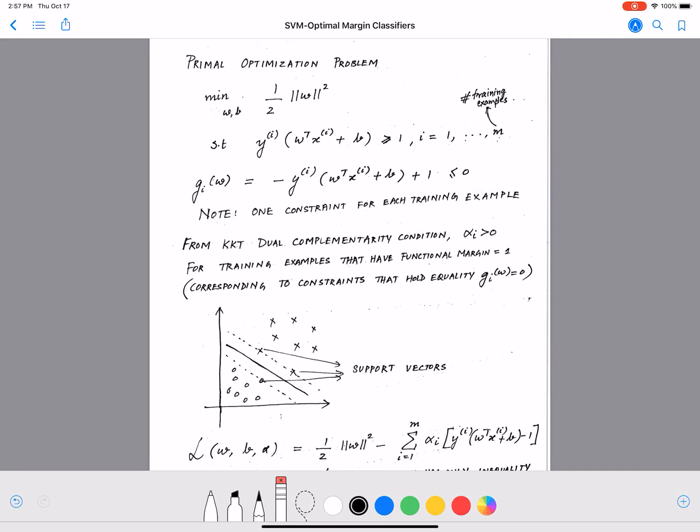Now to solve the optimization problem in SVMs, first off we will start with a primal optimization problem. This is something we already introduced when we were deriving the expression for the margin, so I'm going to mention that just to jog your memory and then continue with this derivation.